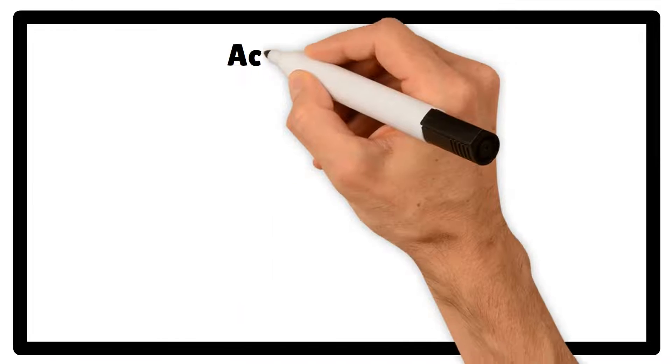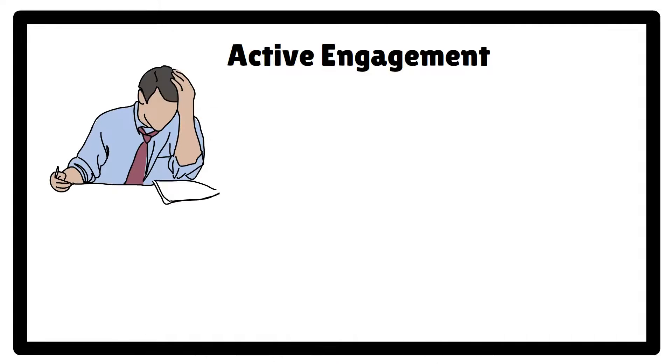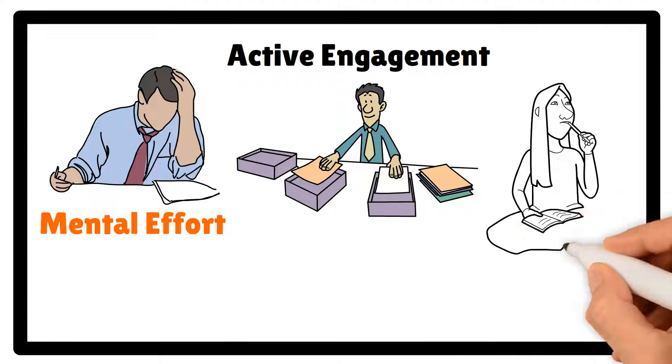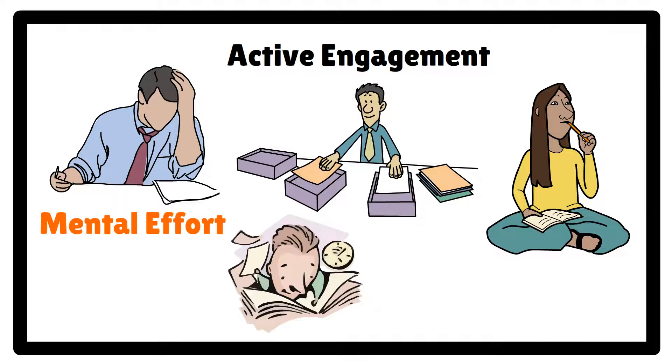The second feature of deep processing is active engagement. This type of processing requires more mental effort and active involvement with the material. It's about making connections and thinking critically about the content rather than just passively absorbing it.